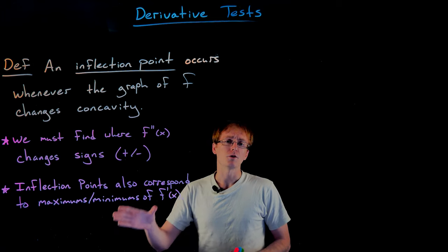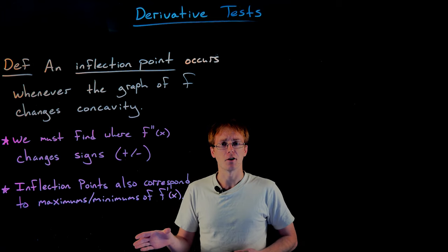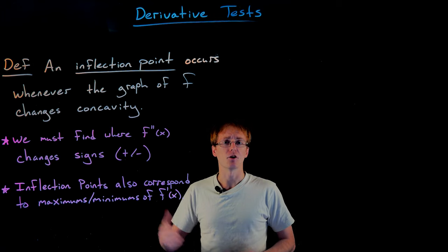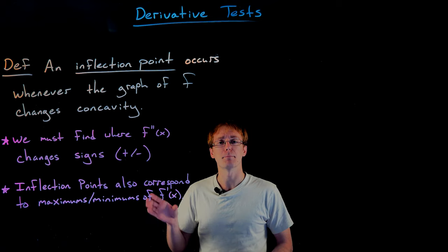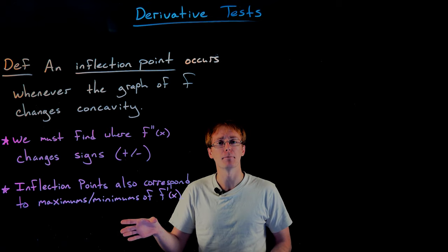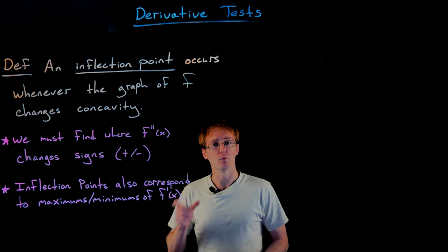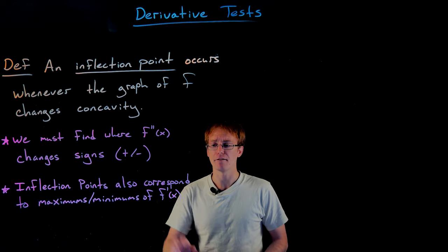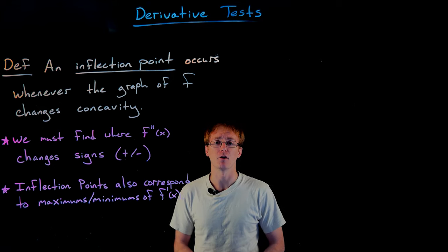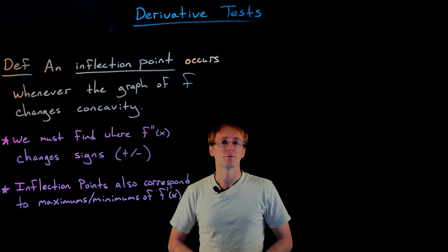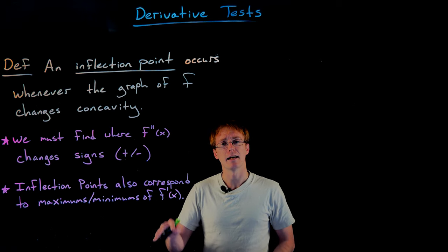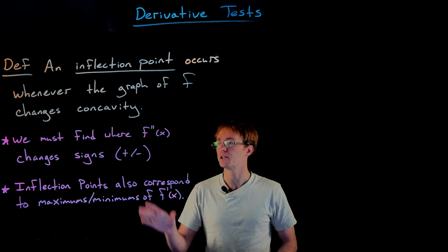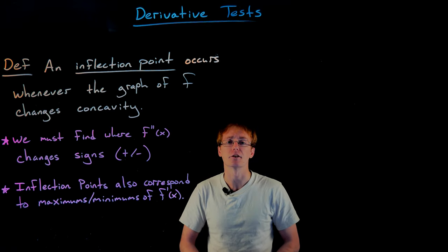We'll also see that this change in concavity — our inflection point — is going to correspond to maximums and minimums, not of the original function f, but of the first derivative f prime. Let's look at some examples to see that this situation is actually occurring.